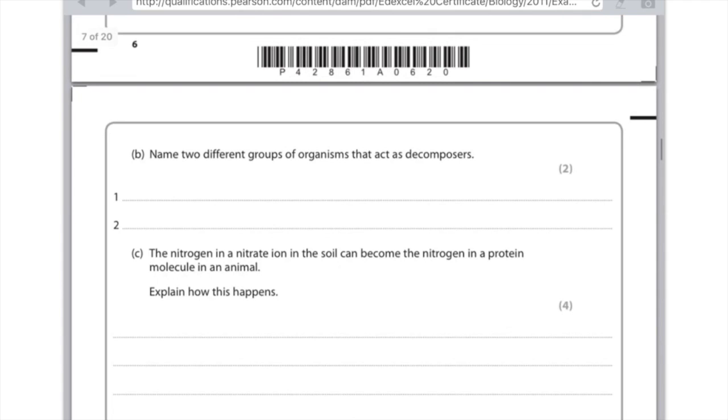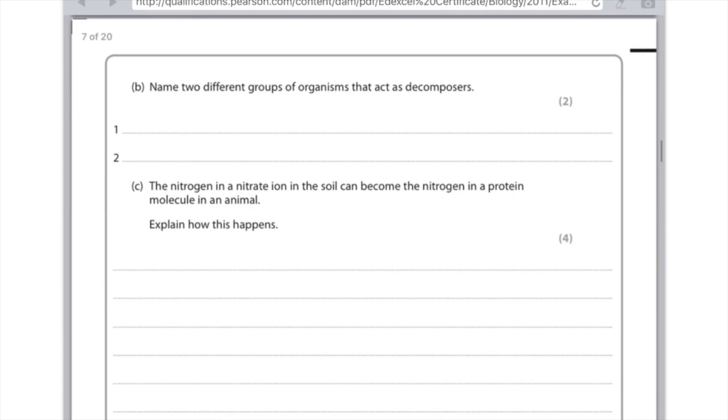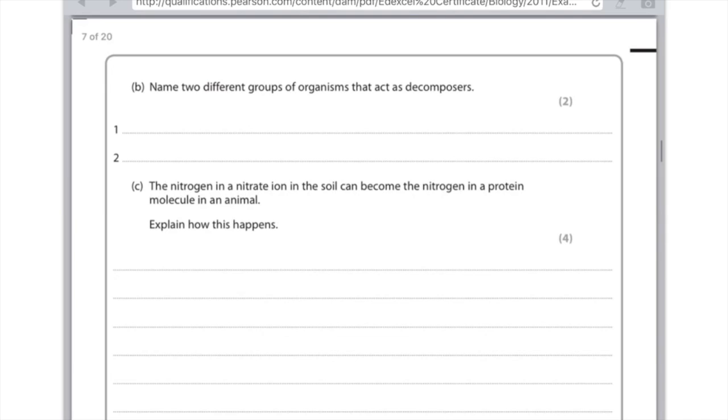C, the nitrogen in the nitrate ion in the soil can become nitrogen in the protein molecule in an animal. Explain how that happens and it's worth four marks. Right, so what you're going to say here is that nitrates are absorbed by the roots of plants and you could get an extra mark here by saying that they do this by active transport.